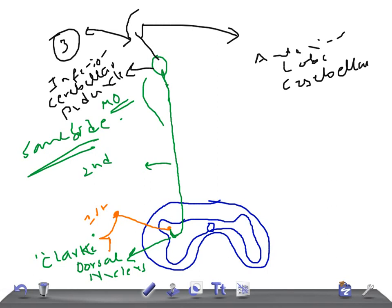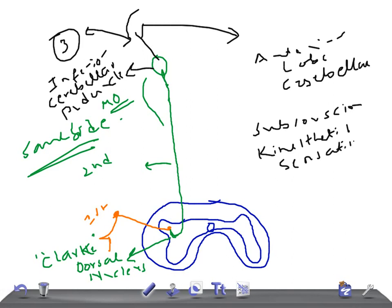The function: along with the ventral spinocerebellar tract, the dorsal spinocerebellar tract carries impulses of subconscious kinesthetic sensation, also known as non-sensory impulses. When there is a lesion of this tract, there is unilateral loss of subconscious kinesthetic sensation on the same side, because this tract has uncrossed fibers — so you lose the sensation on the ipsilateral side.